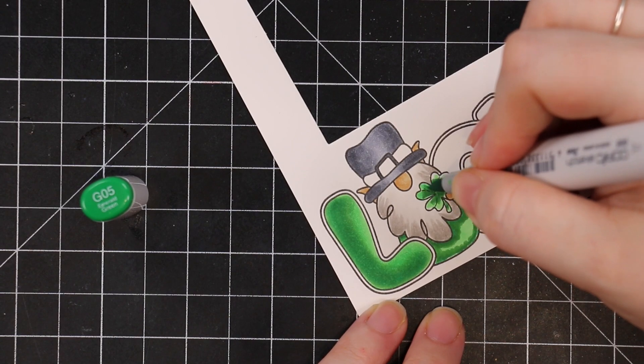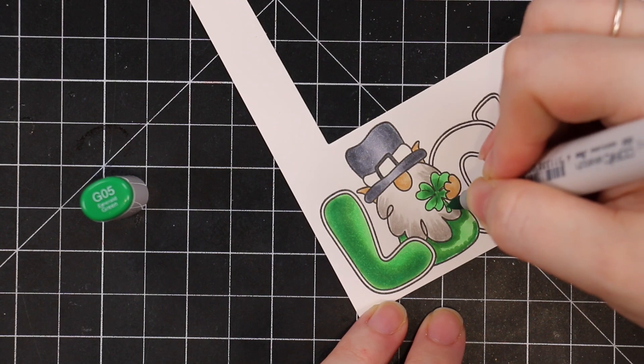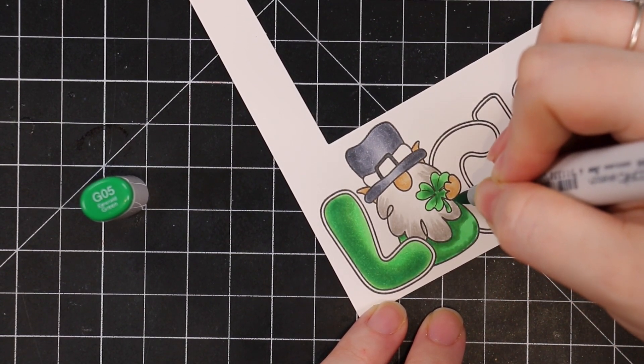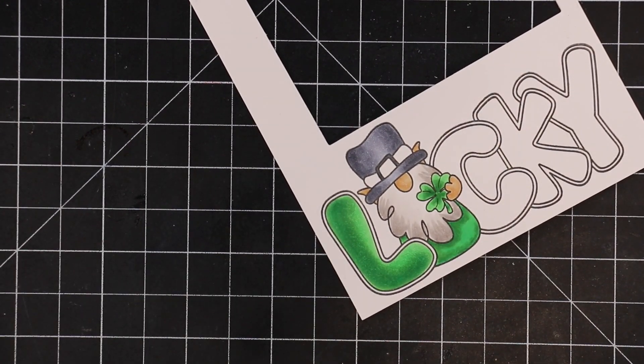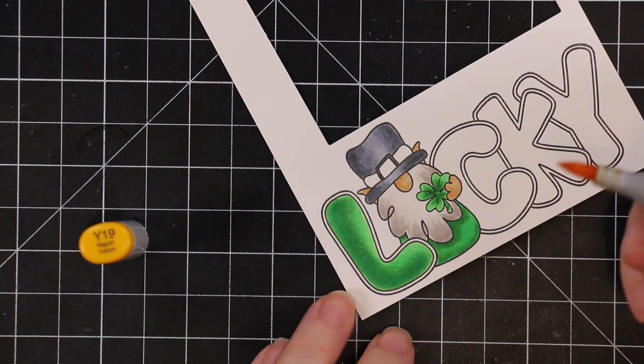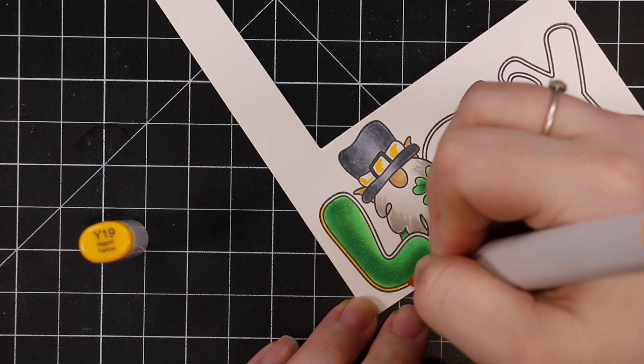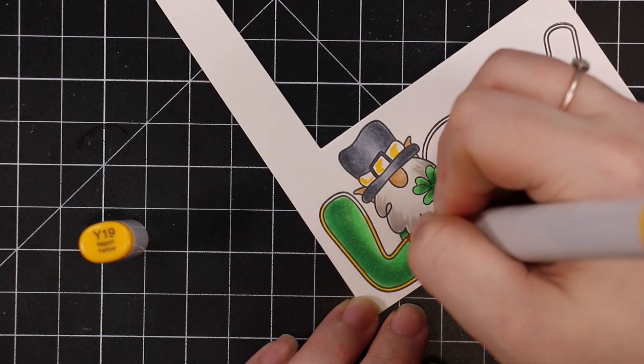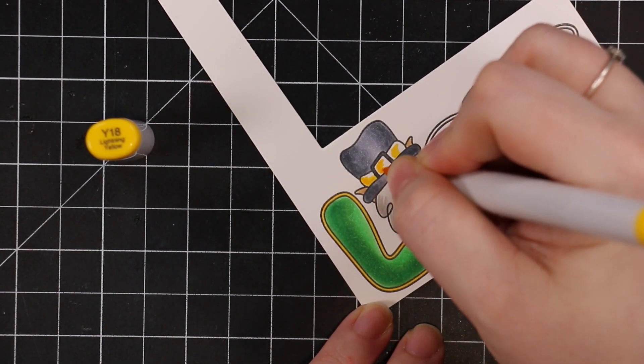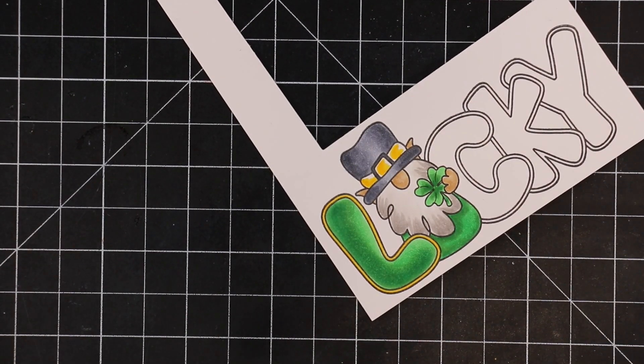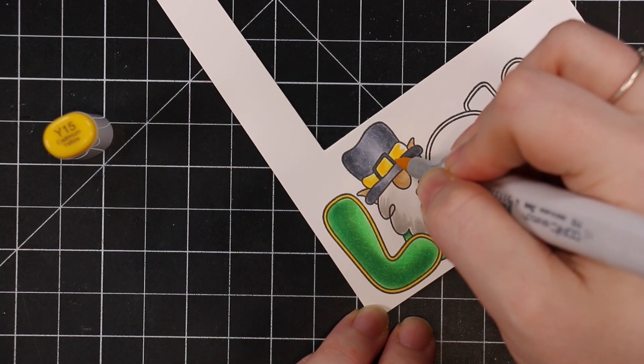This was one of those things where I just didn't want to think too much. I just wanted to sit and color and enjoy this little image. I colored in the clover, and for the band around his hat and the outline around all the letters, I just used yellow Copic markers.